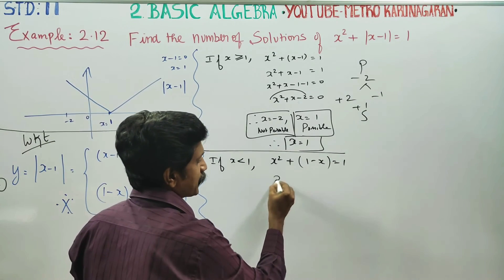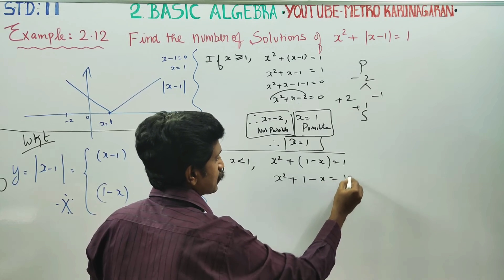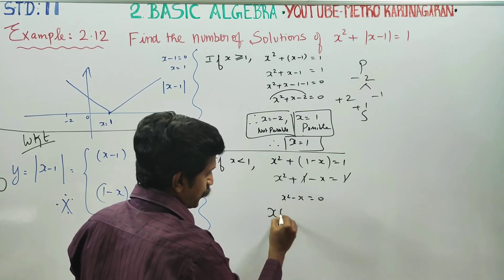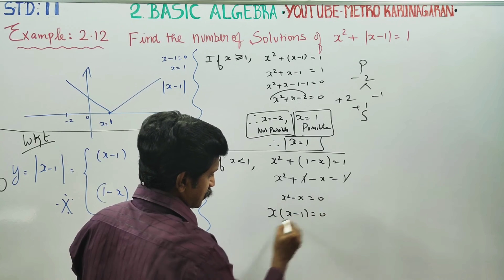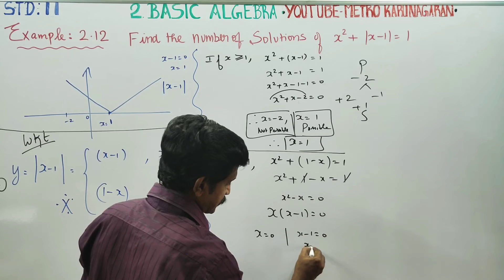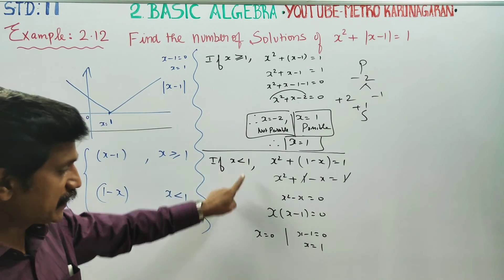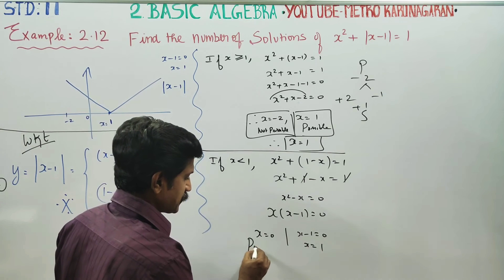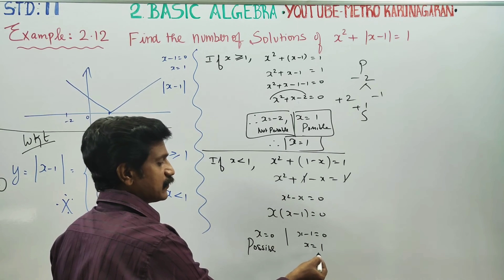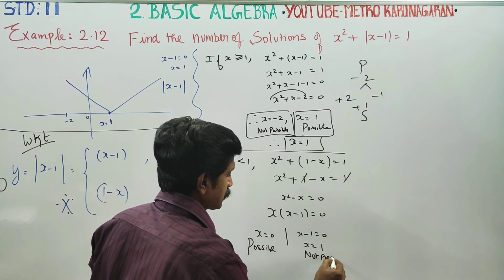For Case 2, x is less than 1. The equation becomes x² plus (1 minus x) equal to 1, giving x² minus x equal to 0. Taking x as common: x(x minus 1) equal to 0. So x equal to 0 or x equal to 1. Since x must be less than 1, x equal to 1 is not possible, so x equal to 0 is accepted.